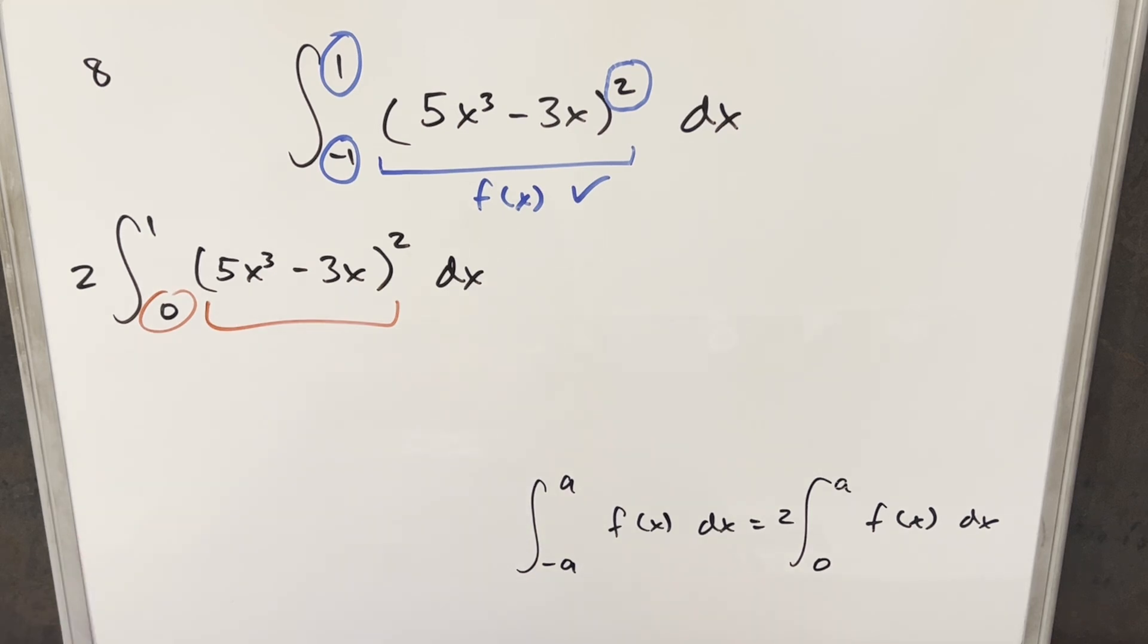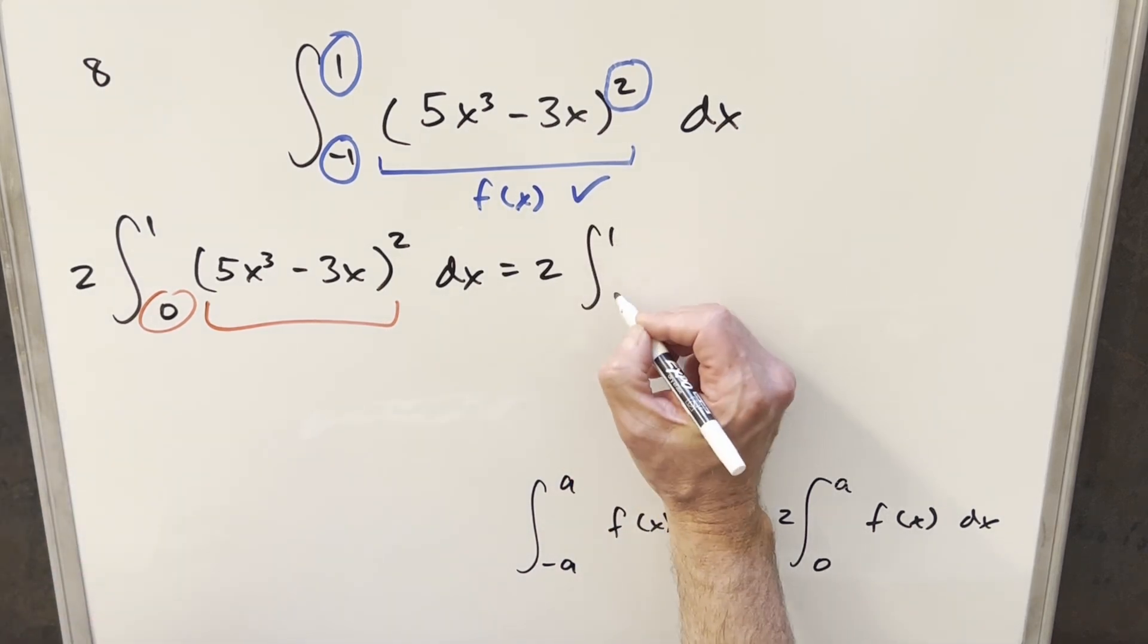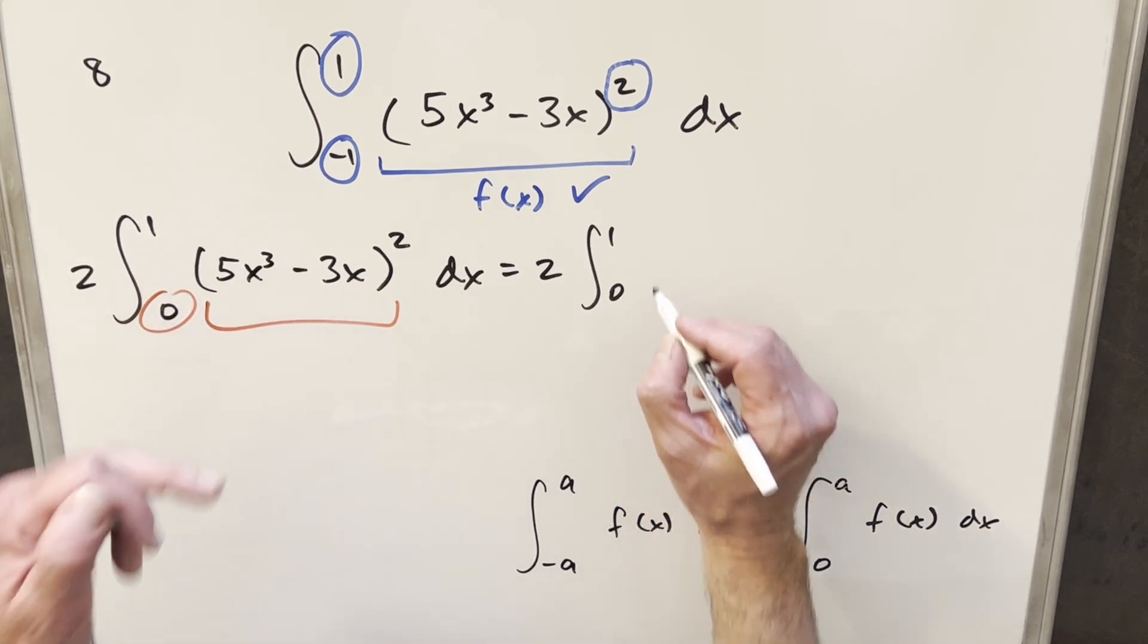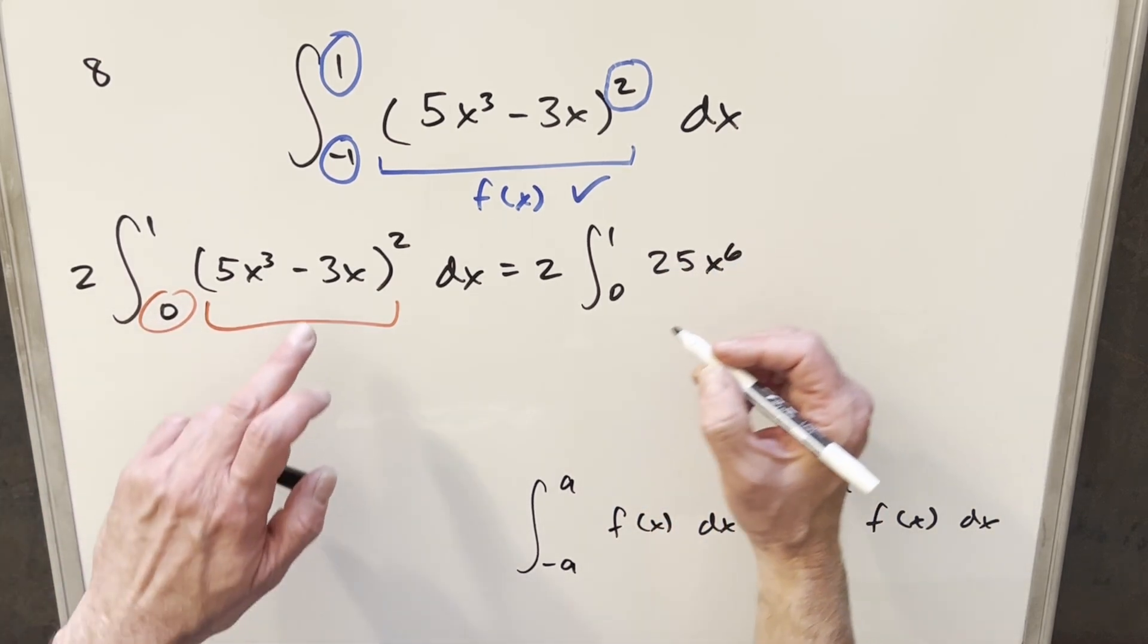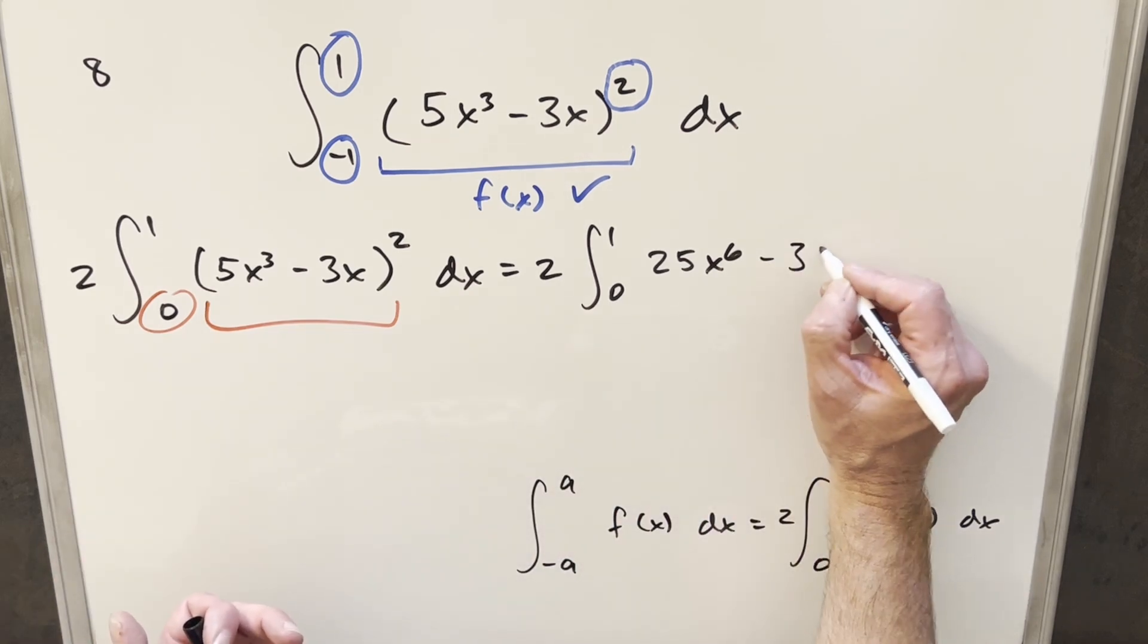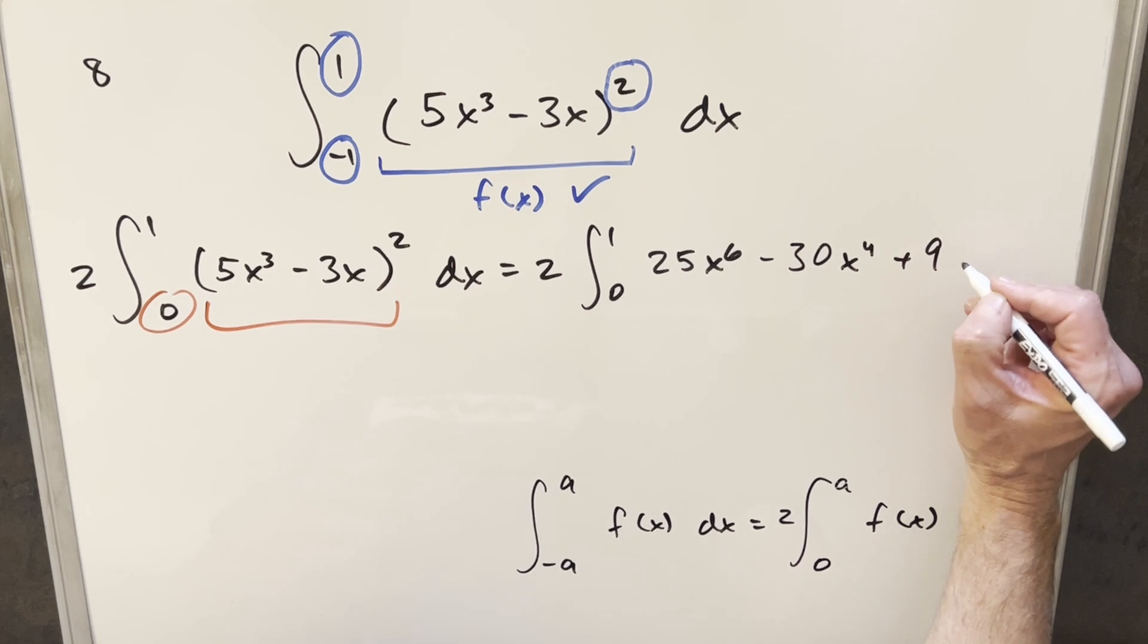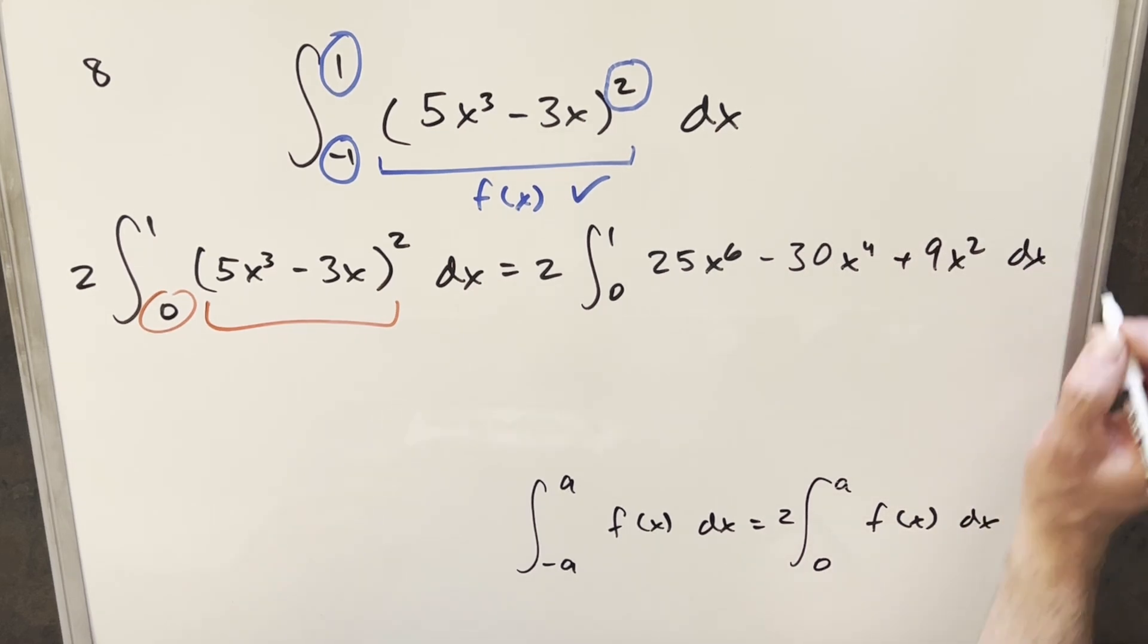But now for this thing, I've got no great idea. What I'm going to do is just multiply it out, just expand it out so I can use power rule. So doing that first, squaring the first term, we get 25x to the 6th. The middle terms are going to be minus 15x to the 4th. We do it twice, we end up with minus 30x to the 4th. Squaring the last term, we're going to get plus 9x squared dx.